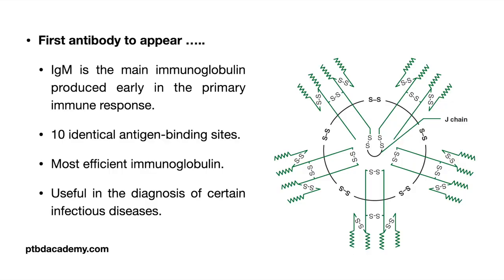The next question covers the first antibody to appear in response to infection, inflammation, and immunity. The first antibody that appears is IgM. IgM is the main immunoglobulin produced early in the primary immune response. In the secondary immune response, IgG is predominant. IgM is present on the surface of virtually all uncommitted B cells.